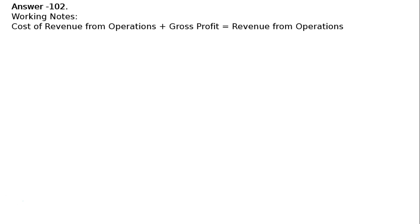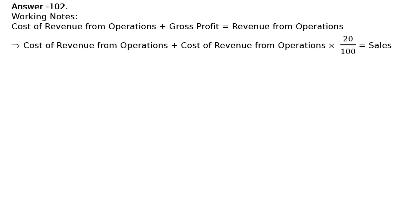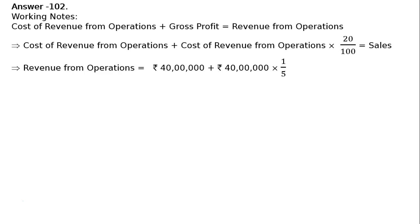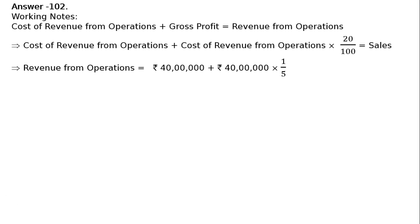Working notes. Cost of revenue from operations plus gross profit is equal to revenue from operations. Here, gross profit is 20% on cost. So in place of gross profit, you write cost of revenue from operations multiplied by 20%. Revenue from operations equals Rs. 40,00,000 plus 40,00,000 × 20%, that is Rs. 40,00,000 plus Rs. 8,00,000, which equals Rs. 48,00,000.